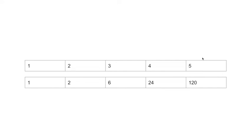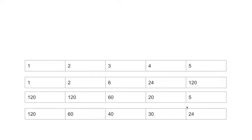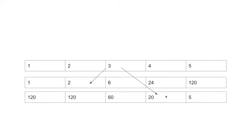Now for the post, we go from right to left and create another set. Because there's nothing after 5 we just use itself. Then it's 20 because we do 4 times 5, then 3 times 20 is 60, 2 times 60 is 120, and 1 times 120. We can use these two tables to find in linear time the product of every element except the element we're at. For example, if we're at 3, the pre-table gives us 1 times 2, and the post-table gives us 4 times 5, so we get 2 times 20 which is 40.